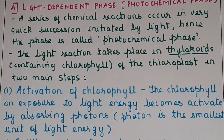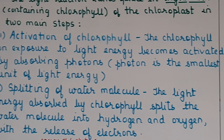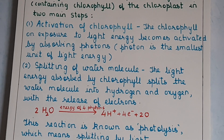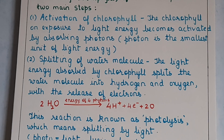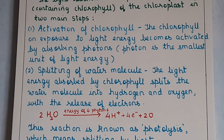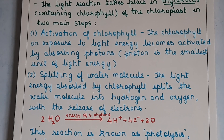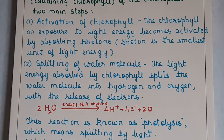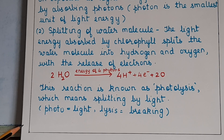The light reaction takes place in two main steps. First is activation of chlorophyll: chlorophyll on exposure to light energy becomes activated by absorbing photons, which is the smallest unit of light energy. Second is the splitting of the water molecule: the activated chlorophyll causes splitting of water into hydrogen ions, electrons, and oxygen — this process is called photolysis. Photo means light and lysis means breakdown.